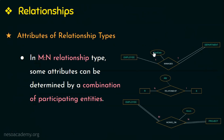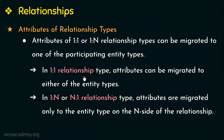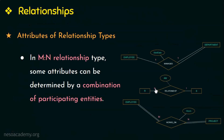In a 1:1 relationship type, the attribute can be migrated to either the employee entity or the department entity — any one of the entities. In an N:1 or 1:N relationship type, the attributes must be migrated to the N side of the relationship. In an M:N relationship type, the attribute 'hours' — representing the number of hours an employee works on a project — is determined by the combination of both the employee and project entities, not separately by either one.